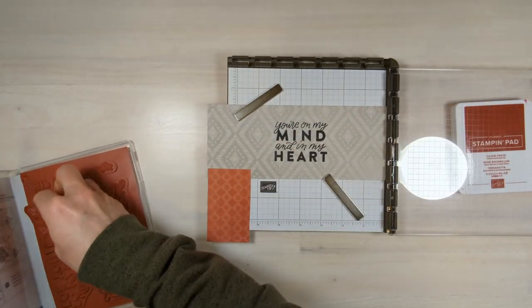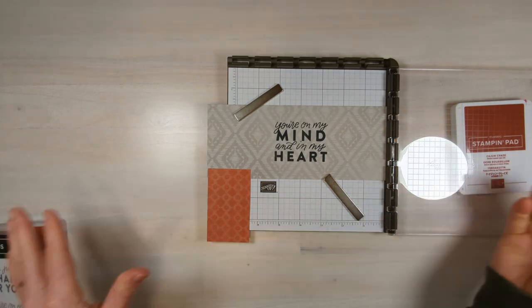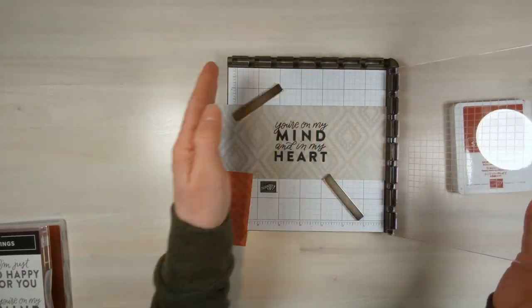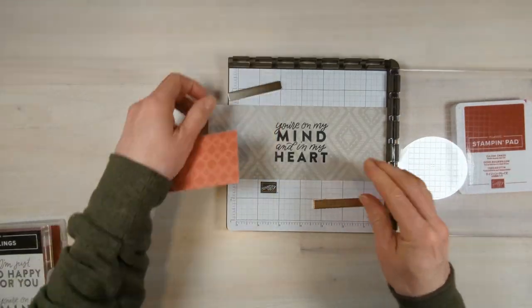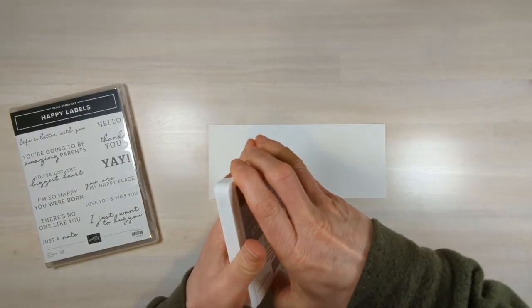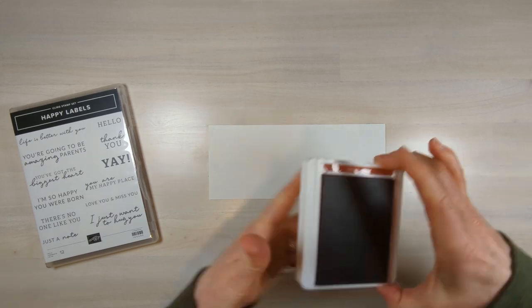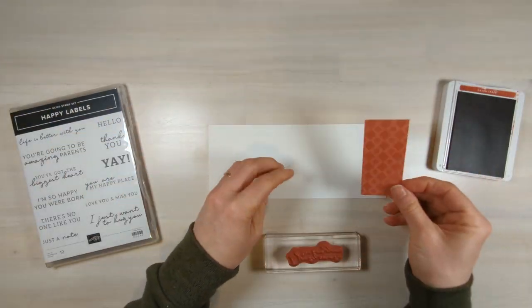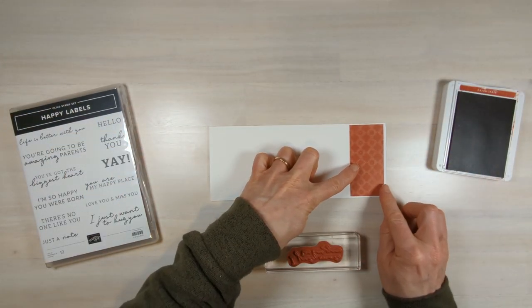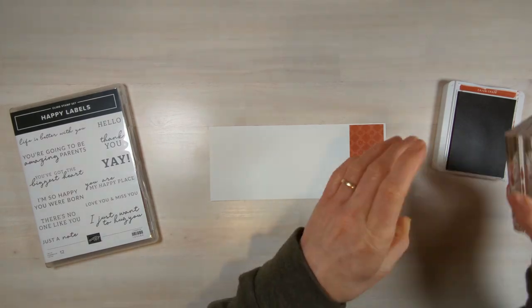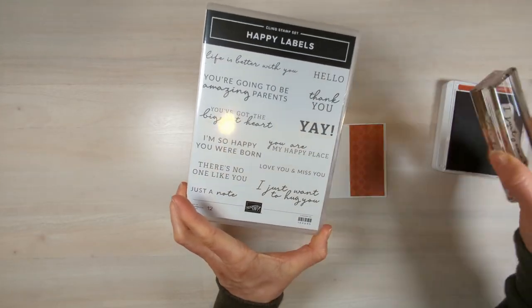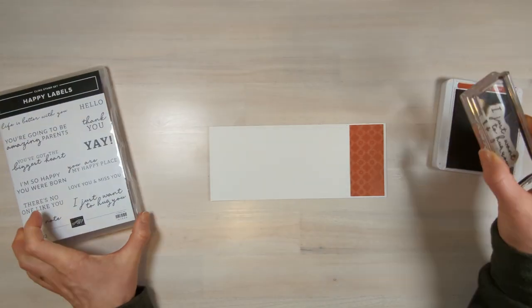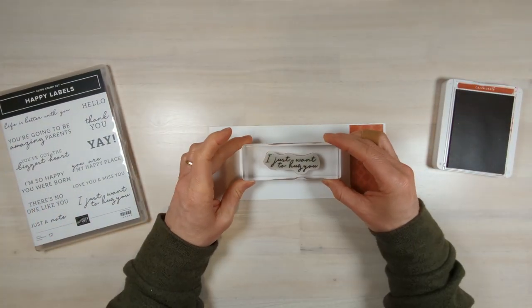This Stamparatus is great if you're making multiples of the same card because you can just see where you want it and just stamp, stamp, stamp. It's fantastic. Now, since I have this ink out, I'm going to go ahead and stamp the inside of my card. Also, I'm going to decide where do I want my Designer Series paper, and then where do I want this stamp to go? I love the sentiments in this new stamp set. I'm going to use the I just want to hug you, and we'll put it just right in the middle.